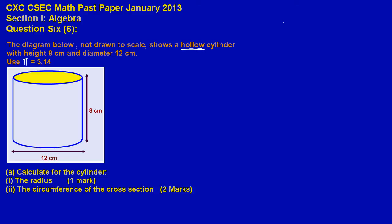Hi my friends, in this video we're going to be looking at the solution to question 6 on the January 2013 paper. Here it states the diagram below not drawn to scale shows a hollow cylinder with height 8cm and diameter 12cm.